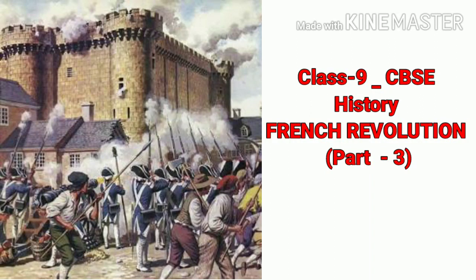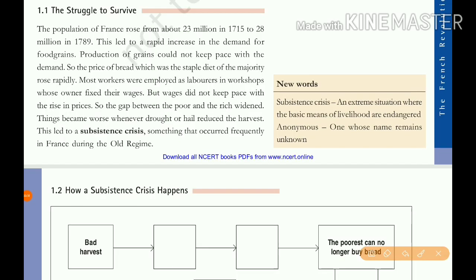This is Class 9 CBSE History, French Revolution Part 3: The Causes of Outbreak of French Revolution. There are four causes: political causes, social causes, economic causes, and intellectual or immediate causes. Political causes and social causes we already learned in the previous video. In this video, we are going to learn about the economic causes and intellectual or immediate causes.